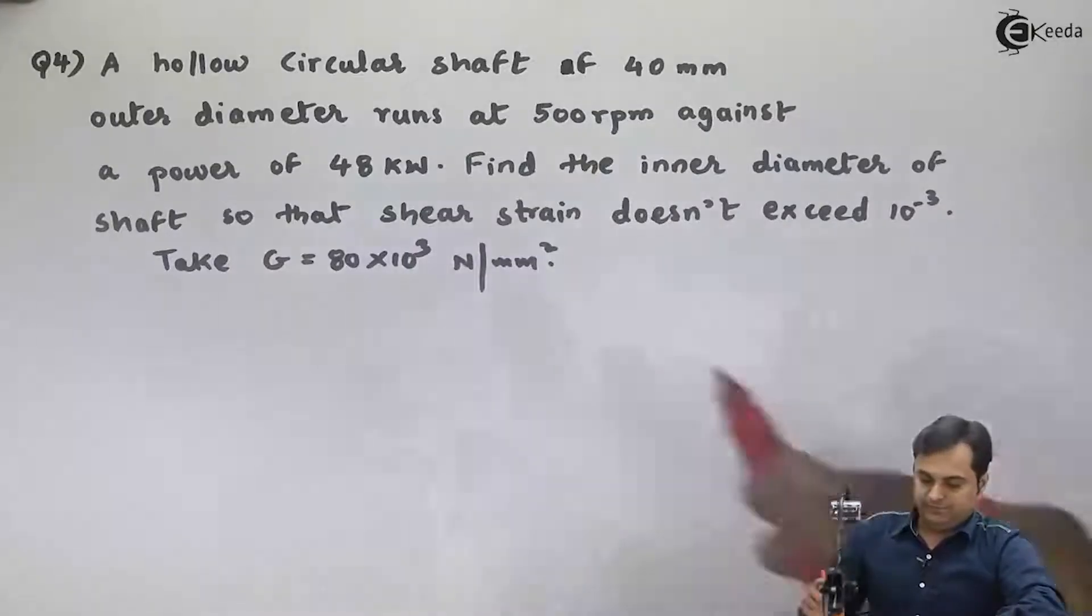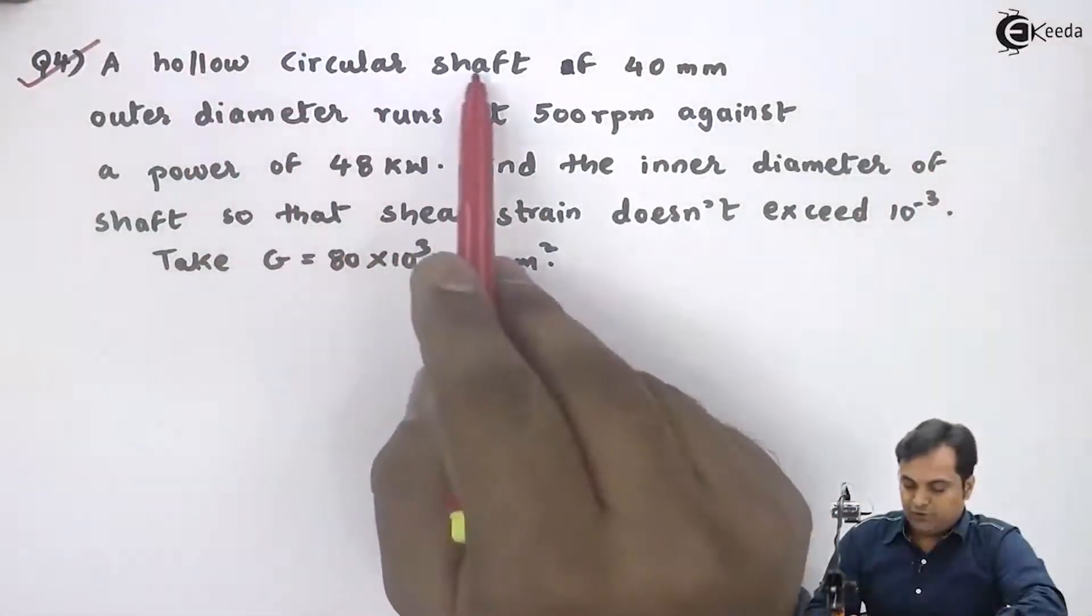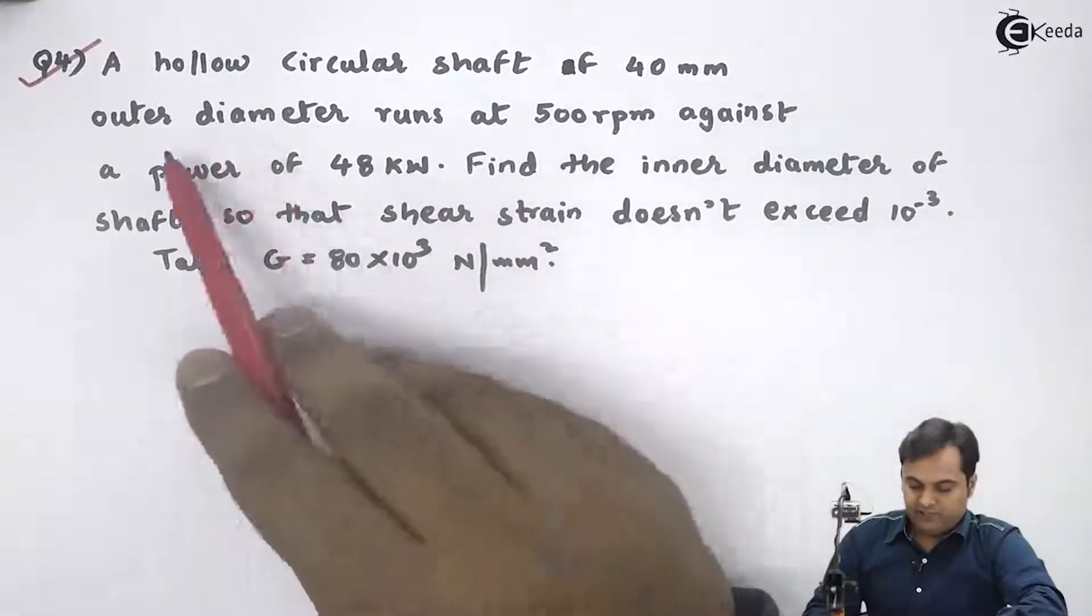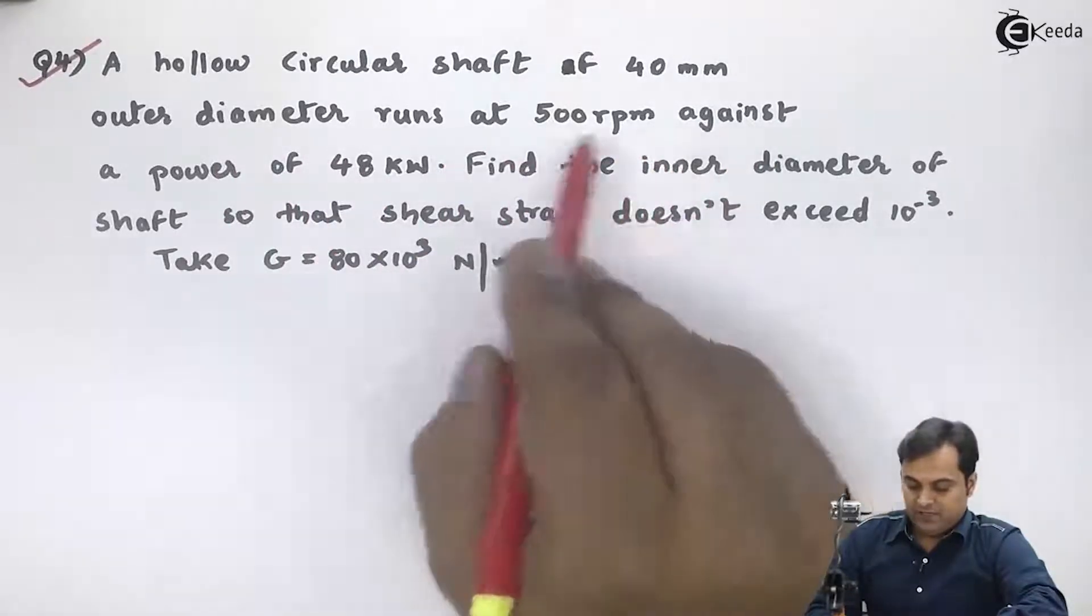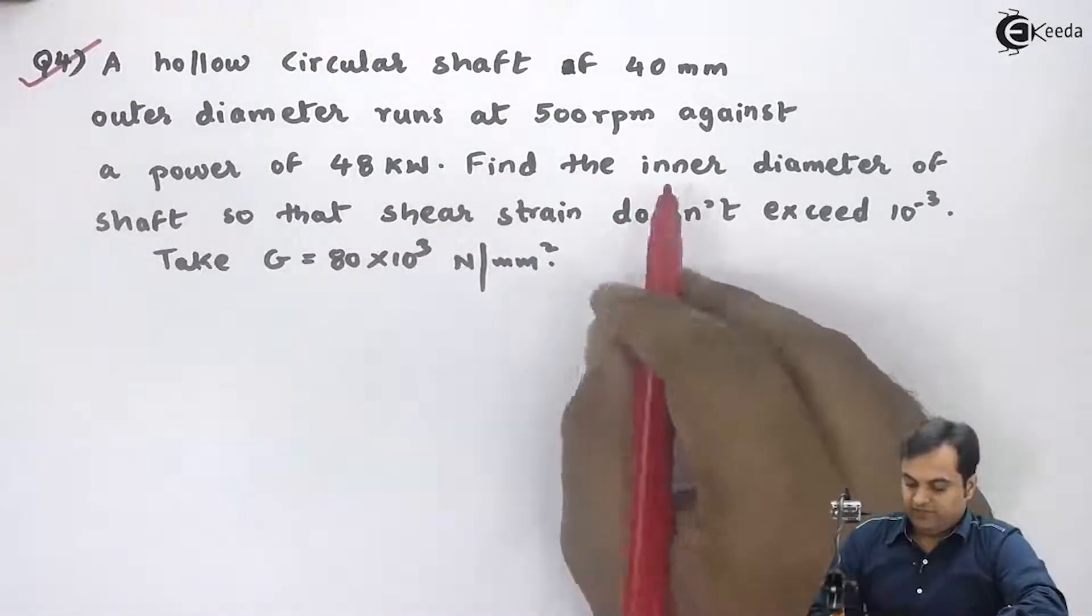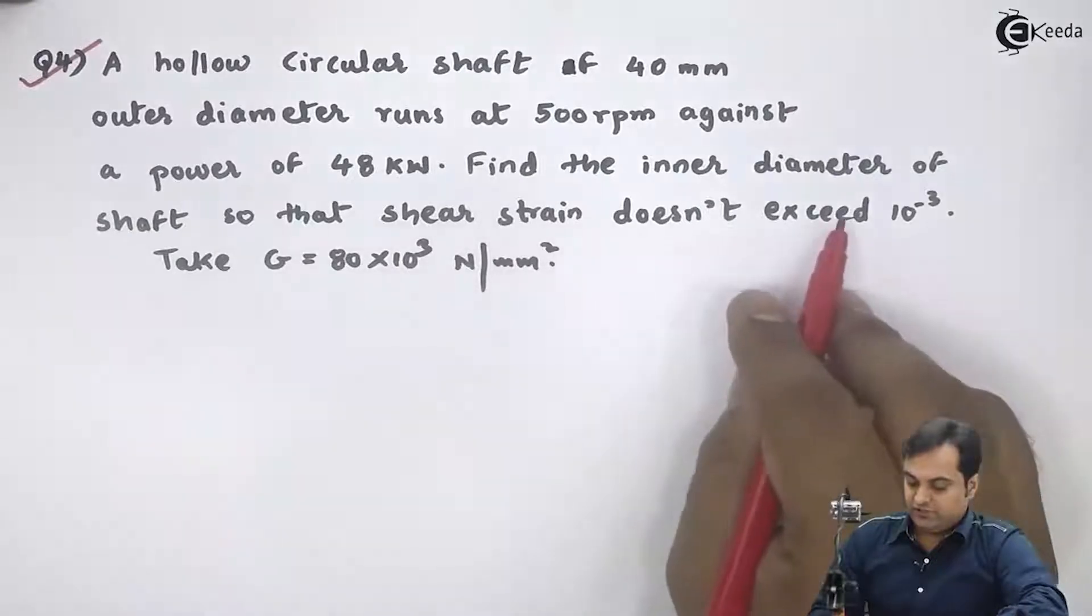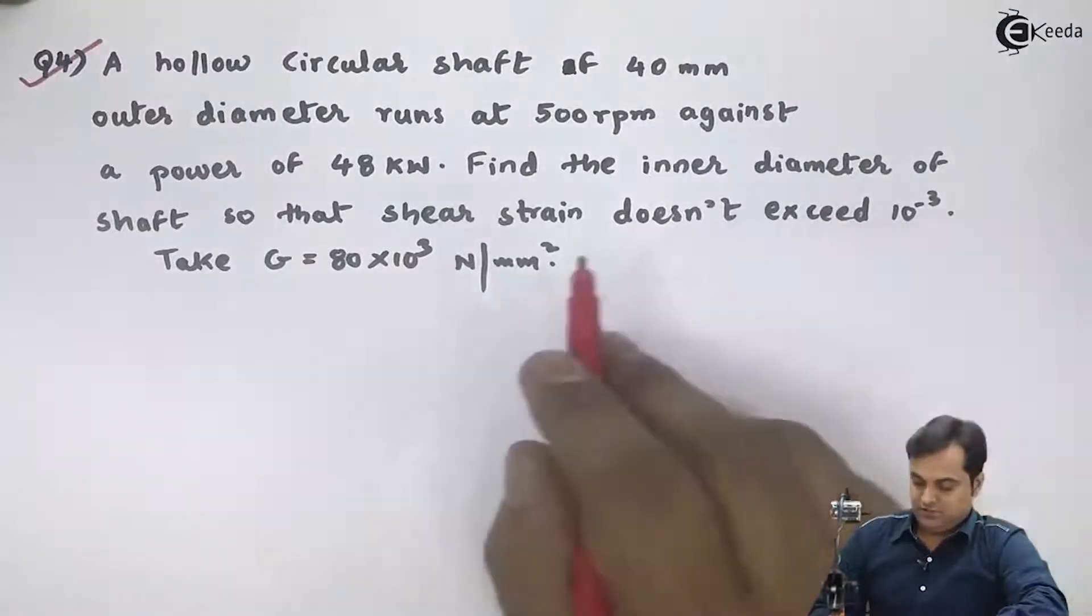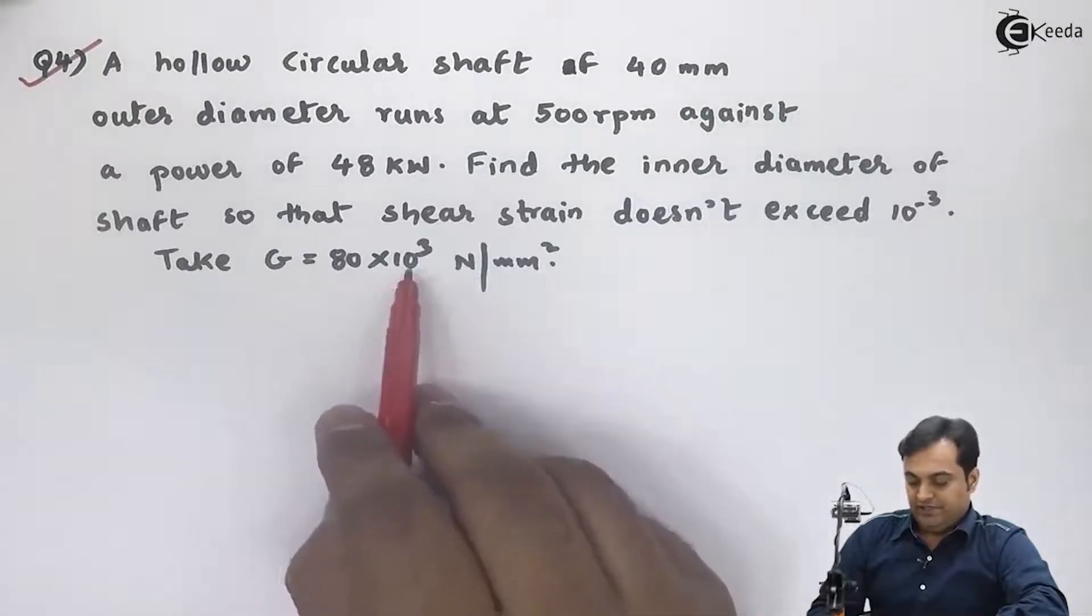Let us take the next question. It is given: a hollow circular shaft of 40 mm outer diameter runs at 500 rpm against a power of 48 kilowatts. Find inner diameter of shaft so that shear strain doesn't exceed 10 to the minus 3. Take G, which is modulus of rigidity, 80 times 10 to the 3 Newton per mm square.